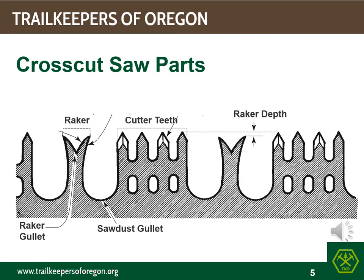Most crosscut saws are comprised of two types of teeth: cutter teeth and raker teeth. The gullet is between the two, and is designed to hold the cut wood until the saw can drop that cut wood outside of the log. There is quite a bit of technical information on dimensions and angles for both the cutter and raker teeth. Competent saw filers can make your day — a saw that sings in operation. On the other hand, a badly worn saw, or one that becomes out of tune, will become a misery whip in operation.